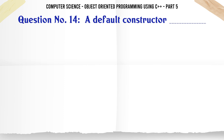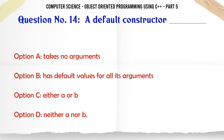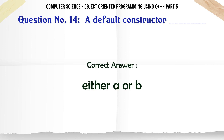A default constructor. A. Takes no arguments. B. Has default values for all its arguments. C. Either A or B. D. Neither A nor B. The correct answer is: Either A or B.